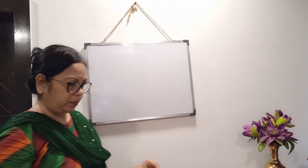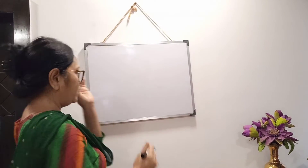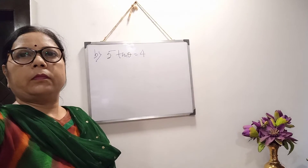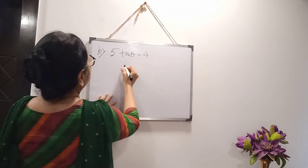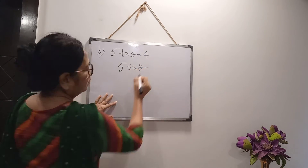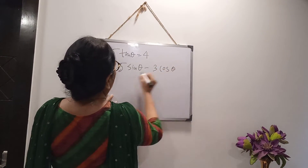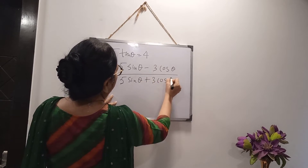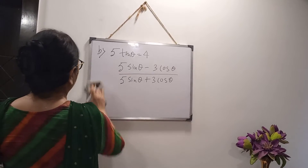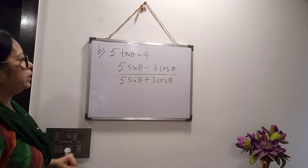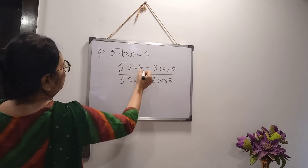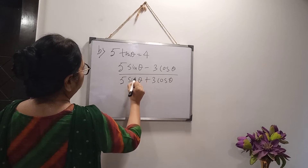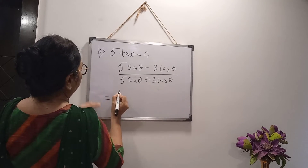Next problem: If 5 tan θ = 4, find the value of (5sinθ - 3cosθ)/(5sinθ + 3cosθ). Tan θ is given, and you know tan in terms of sin and cos: tanθ = sinθ/cosθ. So divide throughout numerator and denominator by cos θ. Here you will get sinθ/cosθ, which becomes tan. And cosθ/cosθ cancels out.